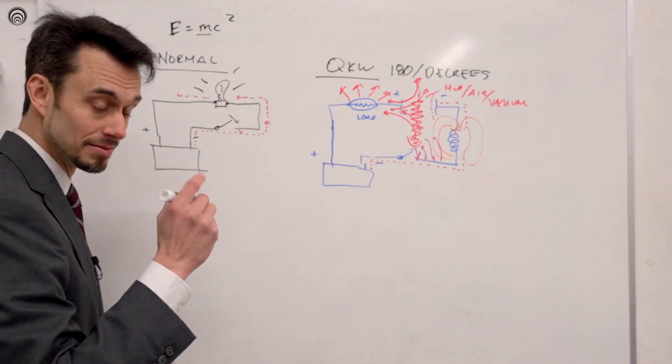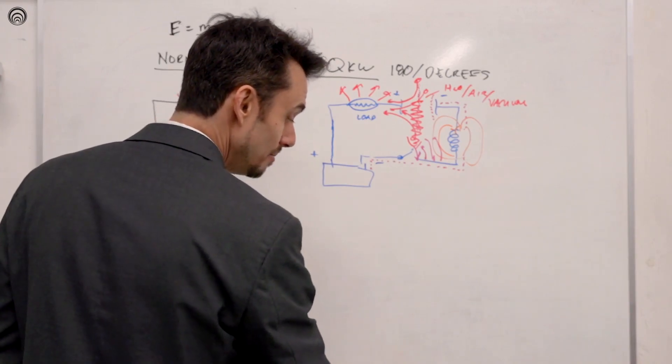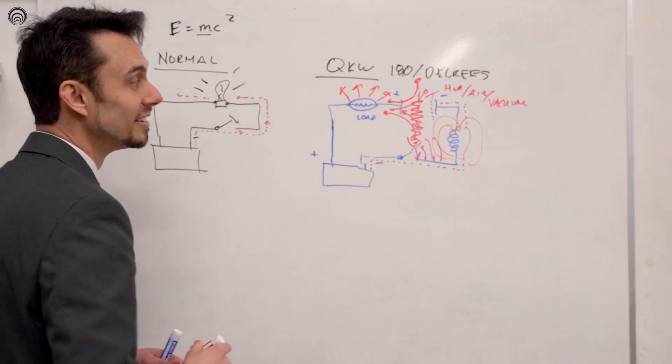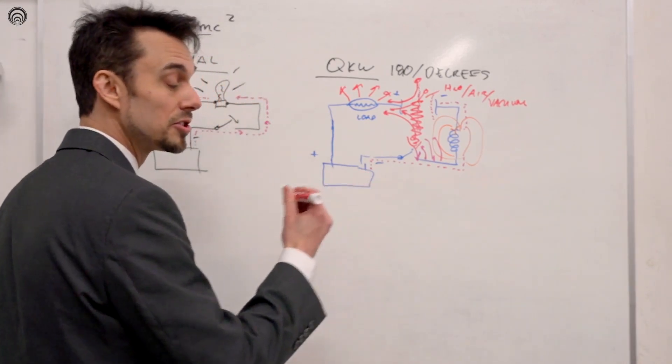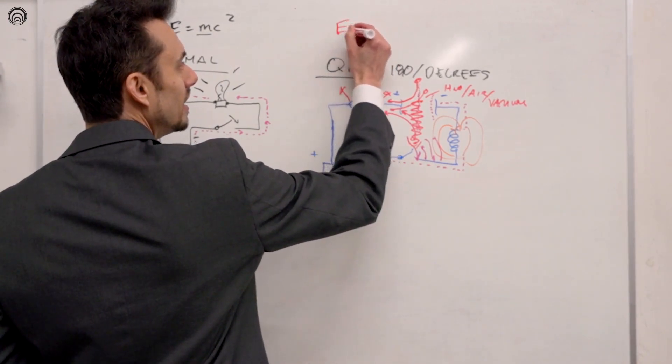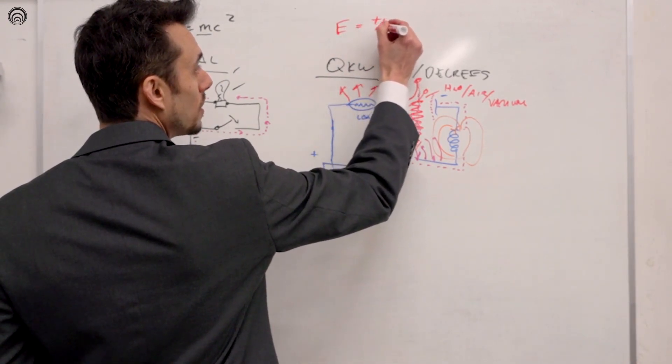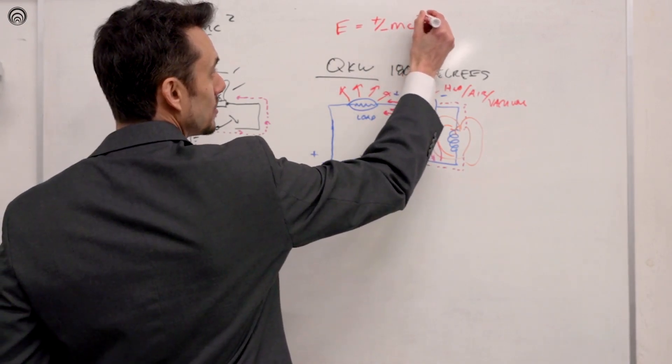Partly right. And maybe why we haven't figured this out yet until now, because here's the real equation: E equals plus or minus mass times the square of light.